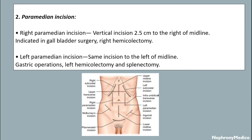Paramedian incision. The right paramedian incision is a vertical incision 2.5 cm to the right of the midline, and it is indicated in gallbladder surgery and right hemicolectomy. The left paramedian incision is the same incision to the left of the midline, indicated in gastric operations, left hemicolectomy, and splenectomy.